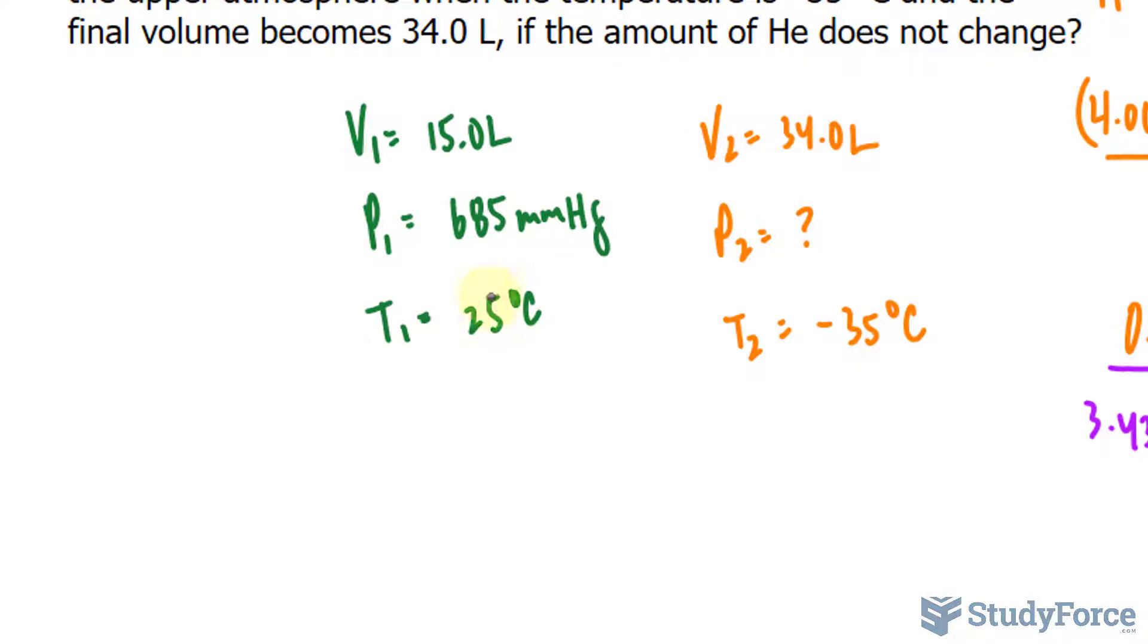Let's go ahead now and convert these two numbers into Kelvin. 25 degrees Celsius in Kelvin, you add 273.15. That leads us to 298.15. But because this number doesn't have any decimals, we'll just drop this 0.15. Similarly, we'll add 273.15 to this number and you should end up with 238.15. You again drop the decimal 15 for the same reason.